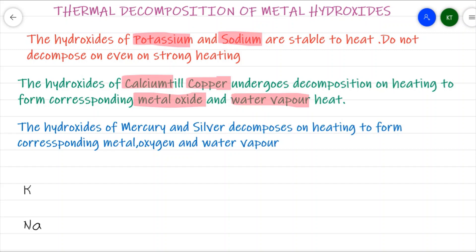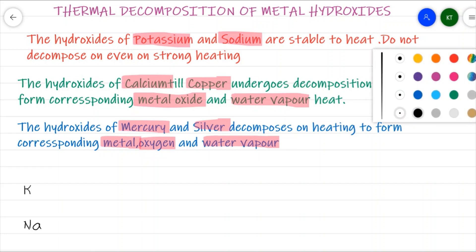Here also, the mercury and silver hydroxides show a difference in behavior compared to other hydroxides. Whenever you heat the hydroxides of silver and mercury, they decompose to give the corresponding metal, along with release of oxygen gas and water vapor — whereas other hydroxides give the metal oxide.